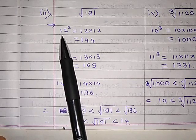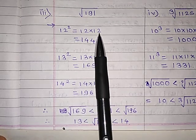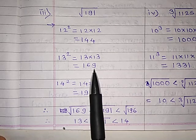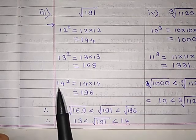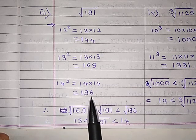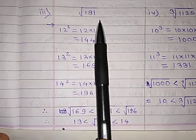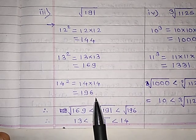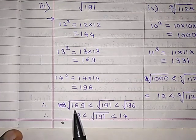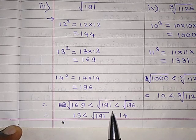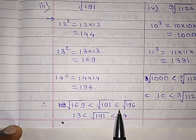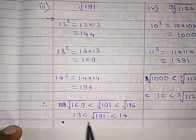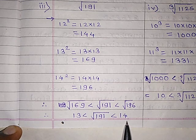Next example: find between which two whole numbers the square root of 191 belongs. We know that 12 squared equals 144, 13 squared equals 169, and 14 squared equals 196. Root 191 lies between 169 and 196, so we can write: 13 is less than the square root of 191, which is less than 14.